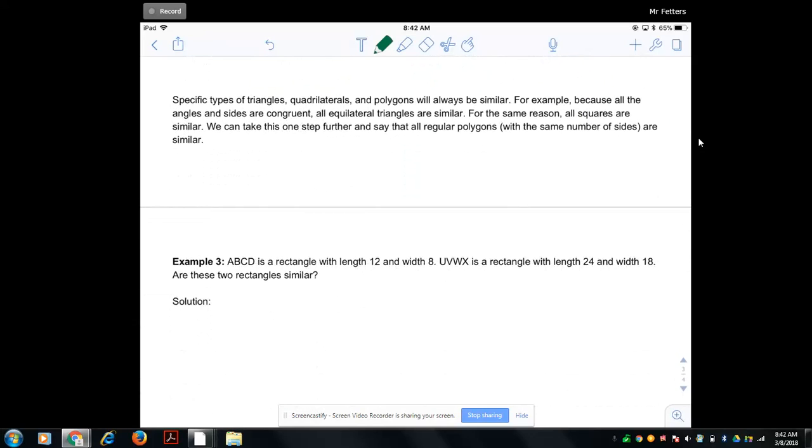Specific types of triangles, quadrilaterals, and polygons will always be similar. For example, because the angles and sides are congruent, all equilateral triangles are similar. For this reason, all squares are similar.